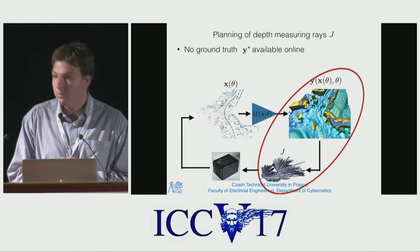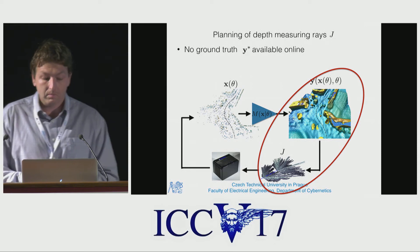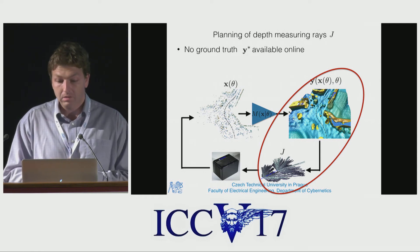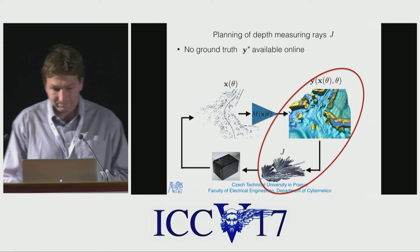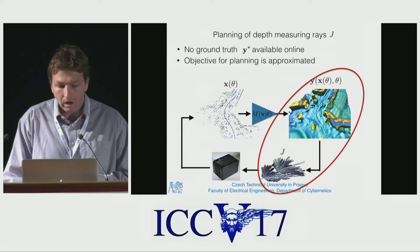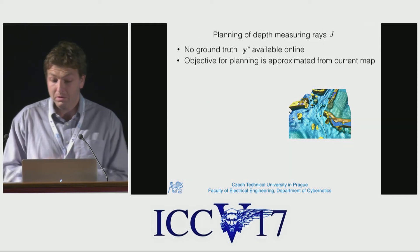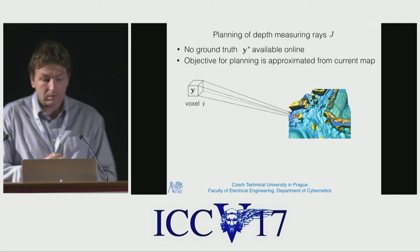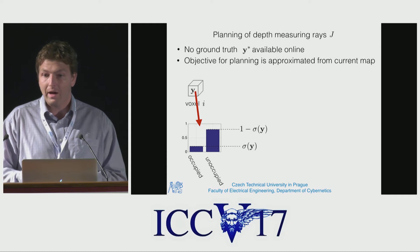Now let me say a few words about the planning procedure. The input to the planning procedure is the currently available map, and the output are depth measuring rays which will decrease the logistic loss of this map the most. Since the ground truth is not available during online planning, we have to approximate the objective from the currently available map.